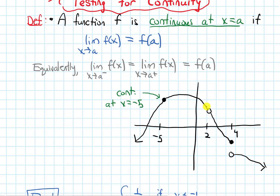At x equals 2, the limit does exist from the left and the right — the y values approach the same thing — but they don't equal f of 2. In fact, f of 2 is undefined because there's no point on the graph where x equals 2. So the function is discontinuous at x equals 2.